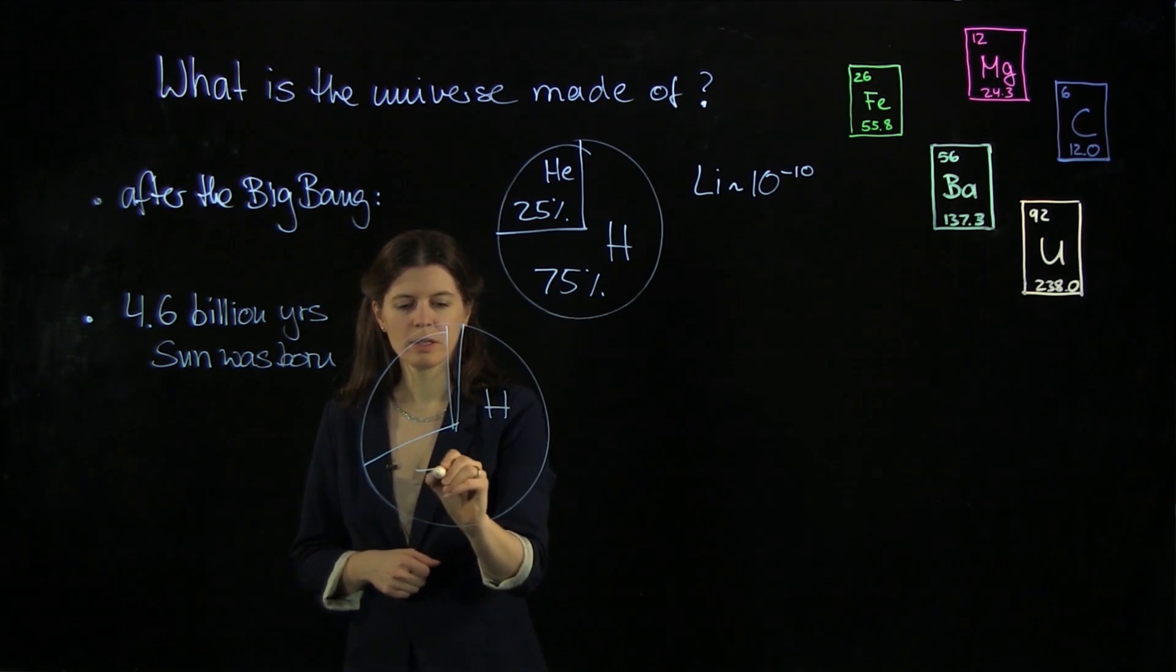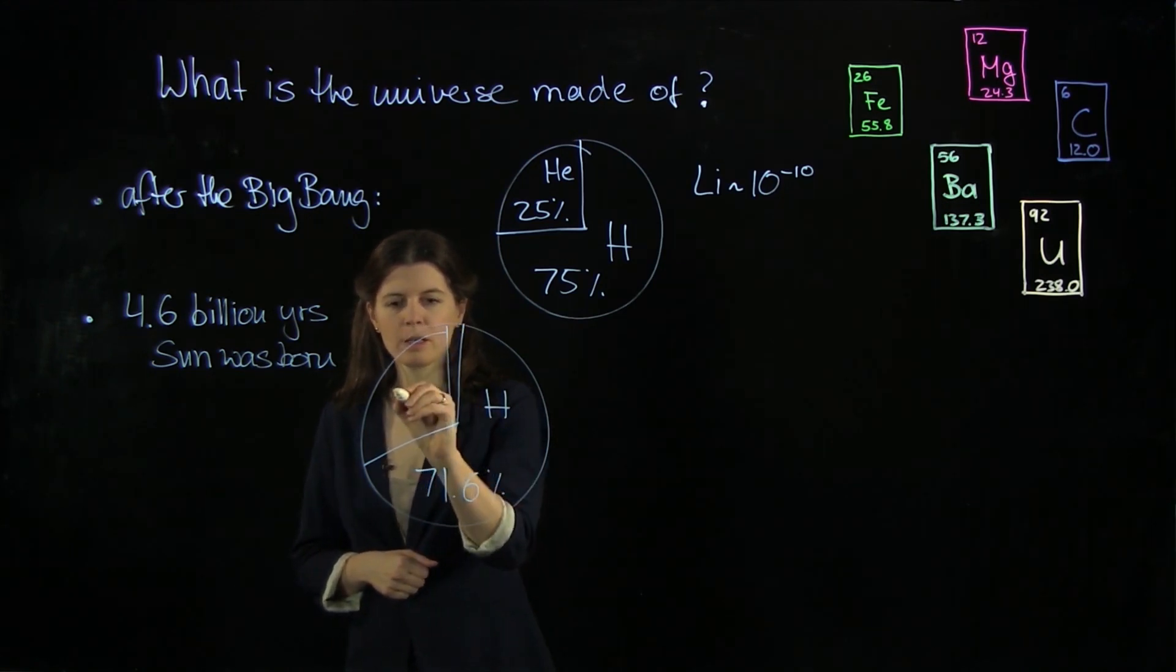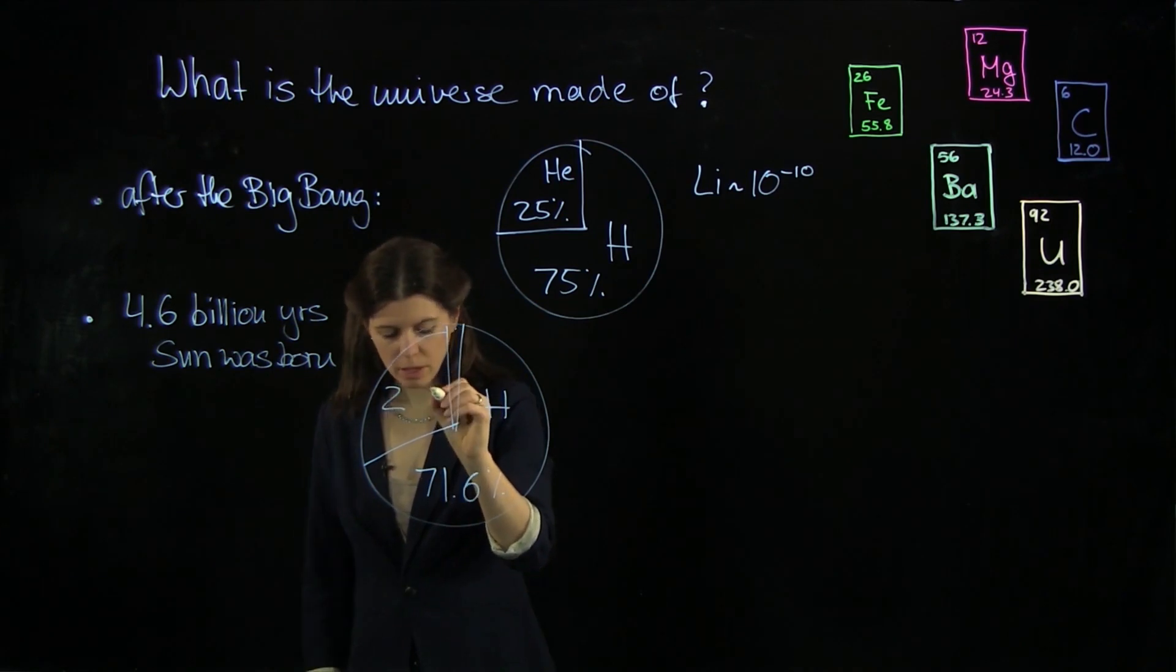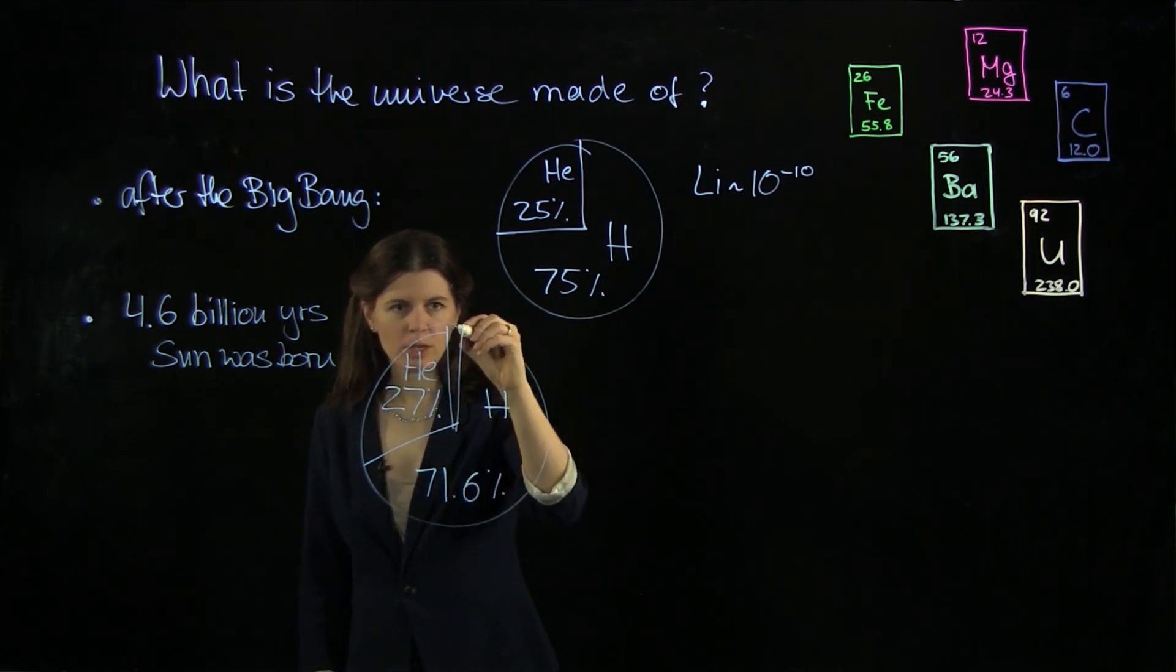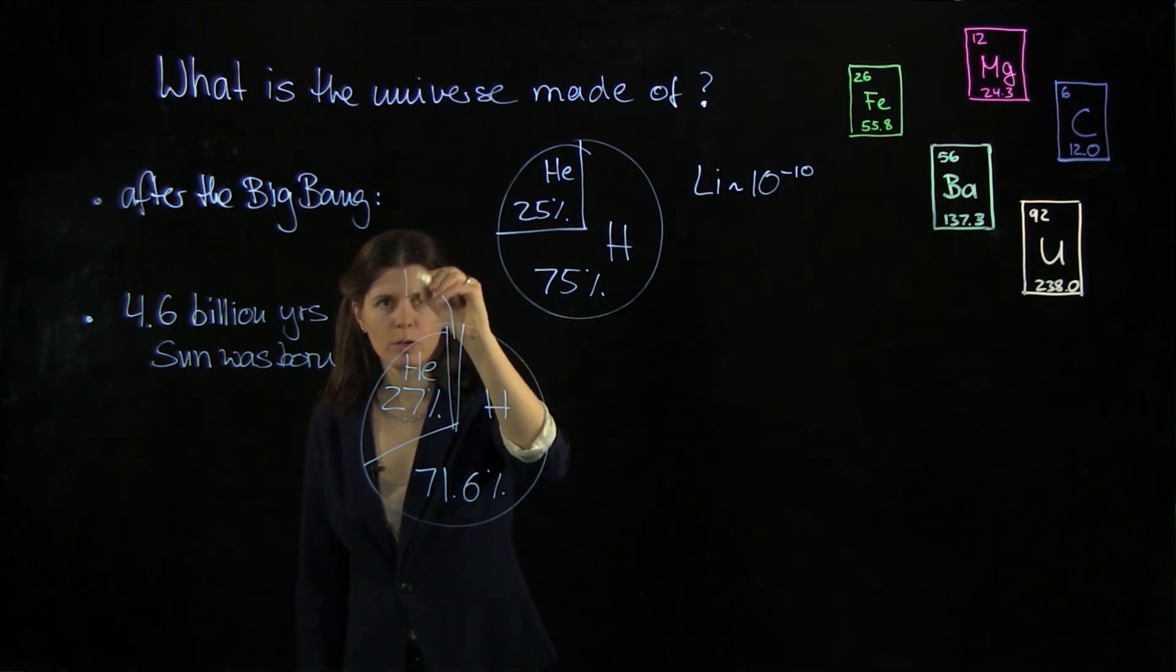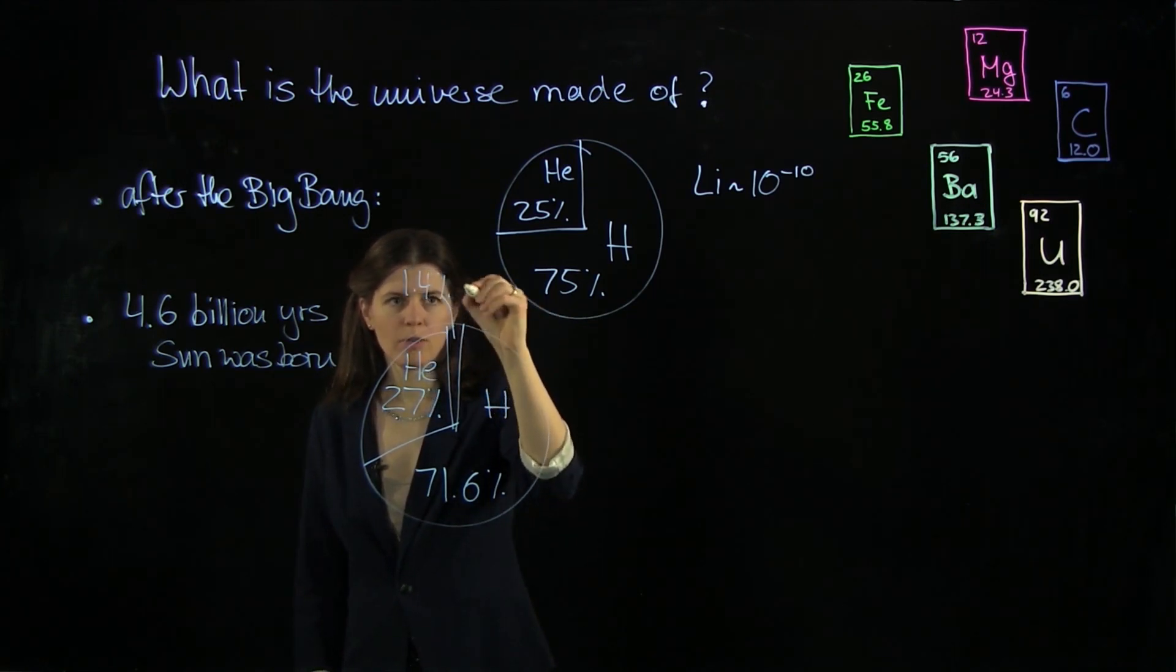Here we have hydrogen, 71.6%, 27% helium. And then this one here, that's 1.4% of heavy elements.